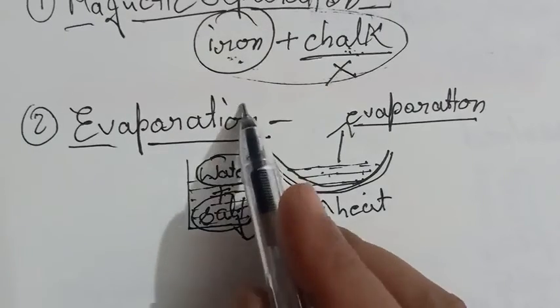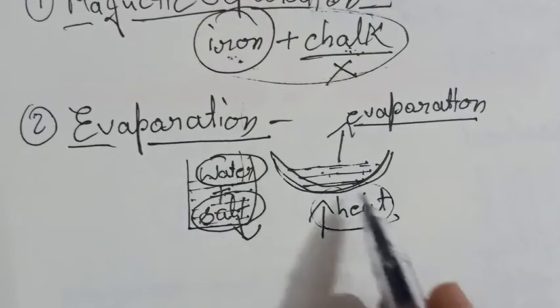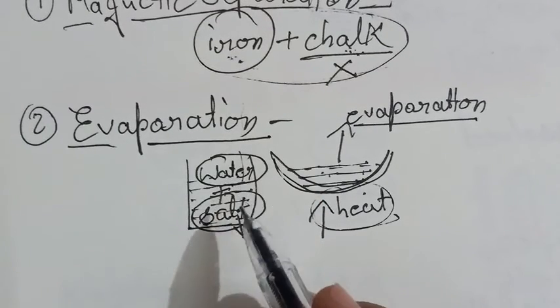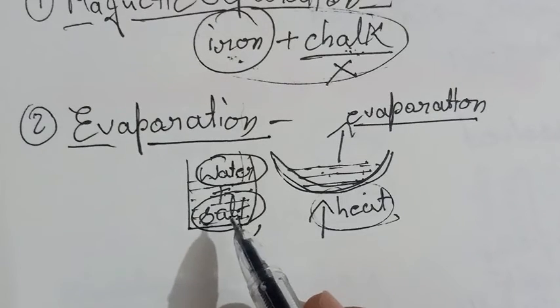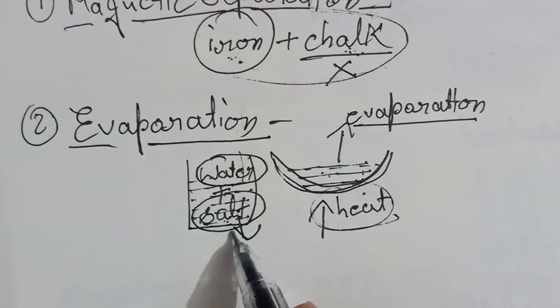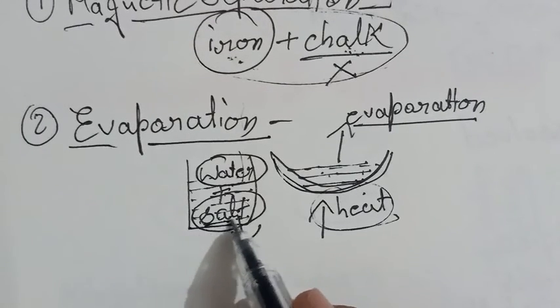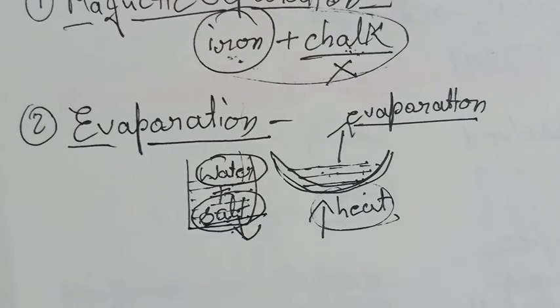The liquid will start evaporation by providing heat, and this water will evaporate. And what is left behind, that is the solid particle. In this example, this solid particle is salt. I hope everything is very clear up to here. Thank you.